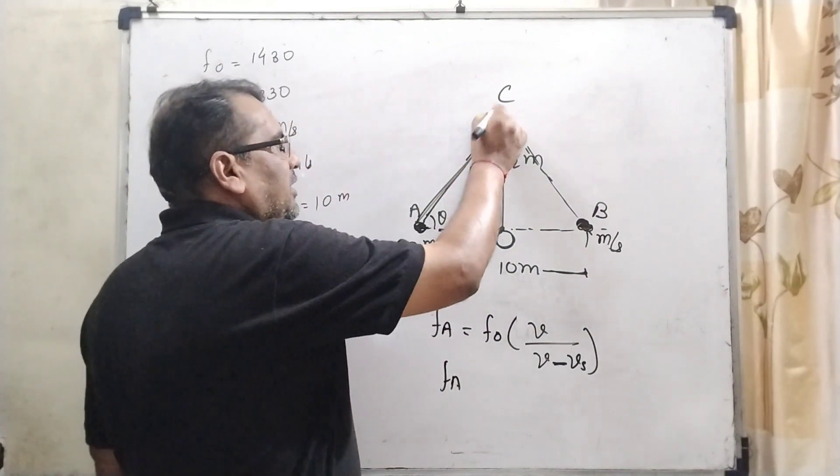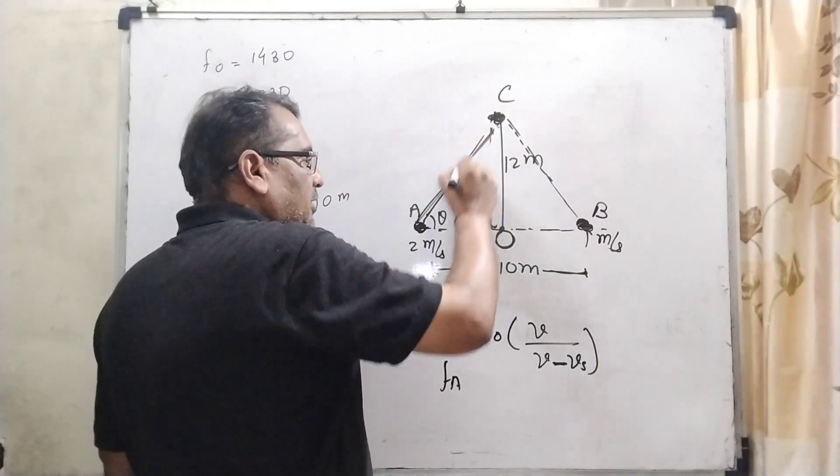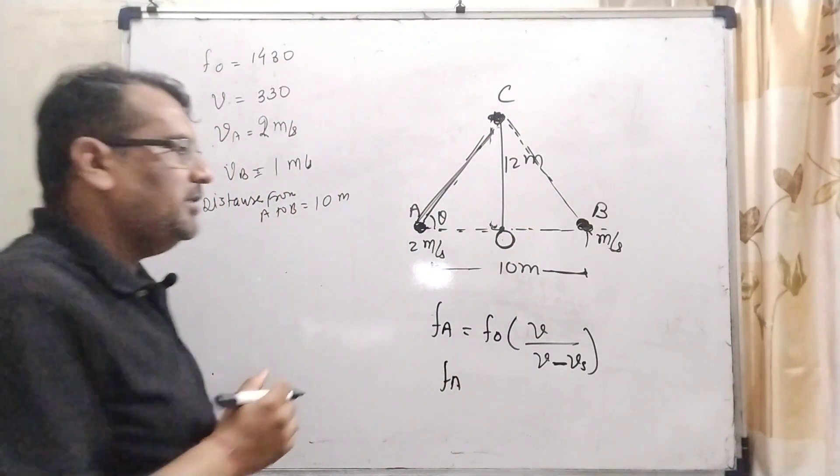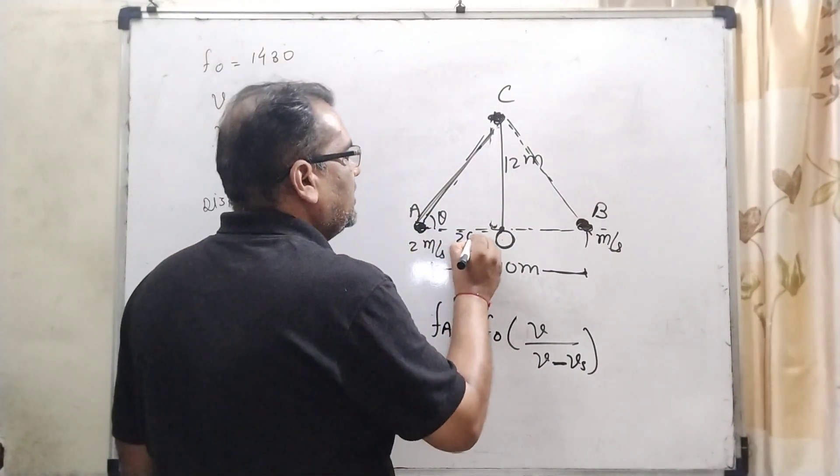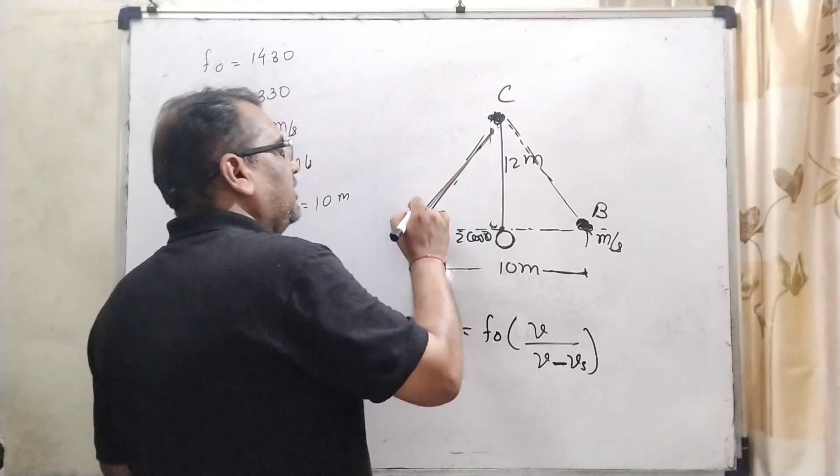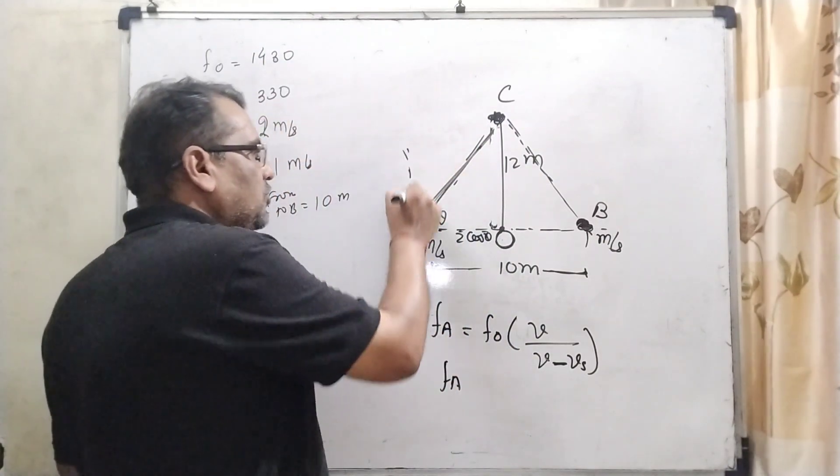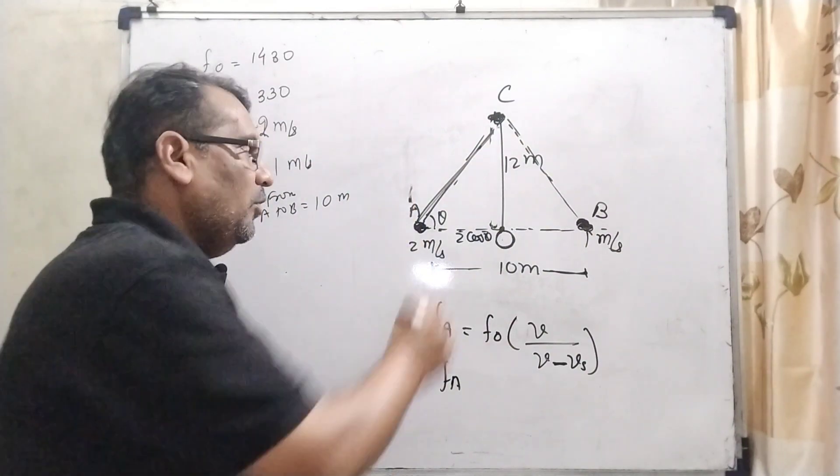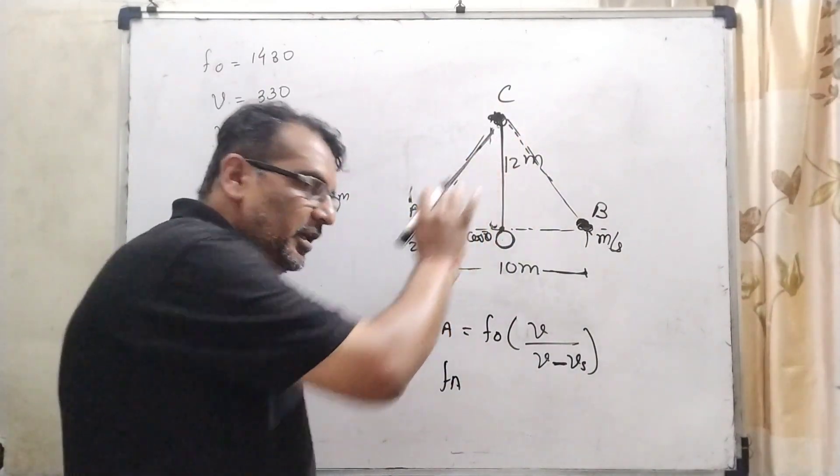But the sensor, the hearing sensor is here. Therefore, the speed of sound is divided into components. That is 2 cos θ and 2 sin θ. The sin component has no use because there is no sensor of the sound there. Only sensor of the sound is here.